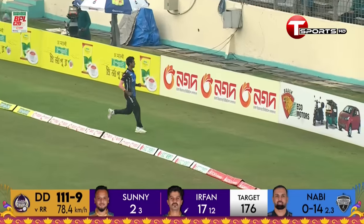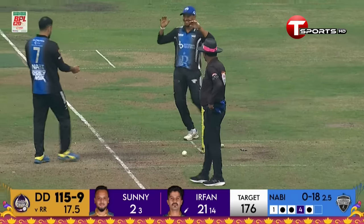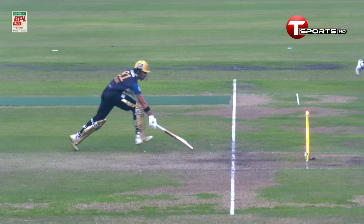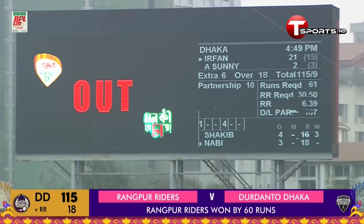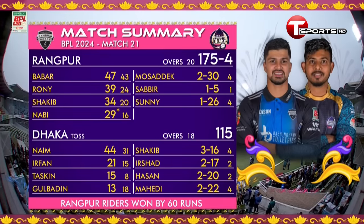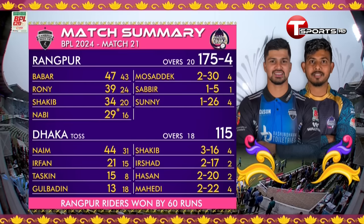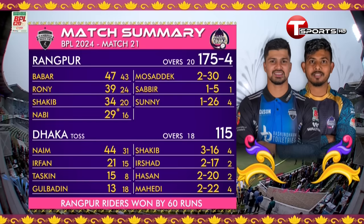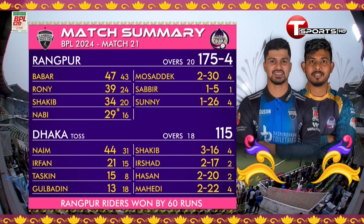Shakur finds the gap and he'll get a boundary. No one came to the crease — this could be trouble. Batsman cannot make his ground when the bails are off — ready to make my decision. The confirmation: Bashundhara Kings — it's OUT, it's all over! Rangpur Riders won the game by 60 runs. Match summary: Rangpur posted 175 for four. Babar Azam top-scored with 47. Ronnie Talukda provided a good start with 39 off 24. Shakib scored 34 — for the first time making an impact with the bat. Nabi scored 29 off just 16 balls. In reply, Dhaka were in all sorts of trouble, falling short to hand Rangpur their fourth consecutive win of the tournament.